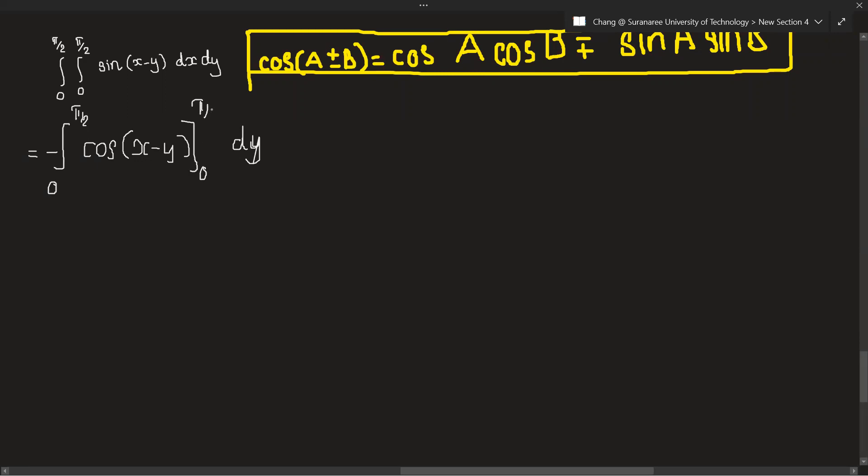Okay, so let's insert the value of x here. We will get minus, from 0 to pi over 2, cos of pi over 2 minus y plus pi over 2 minus 1.